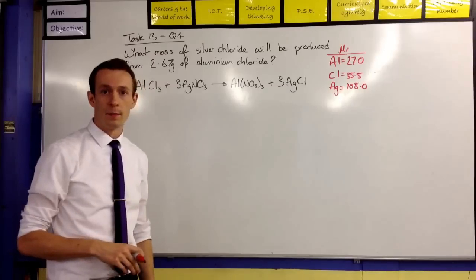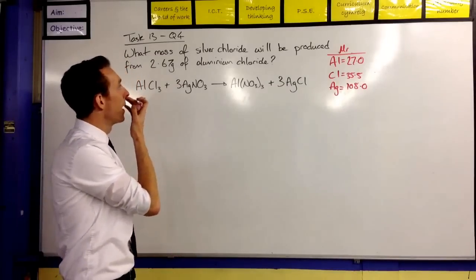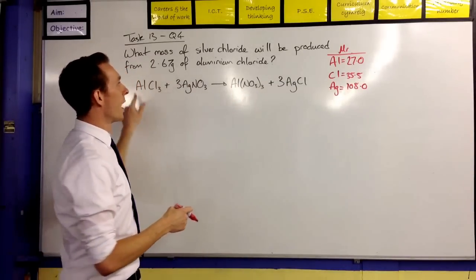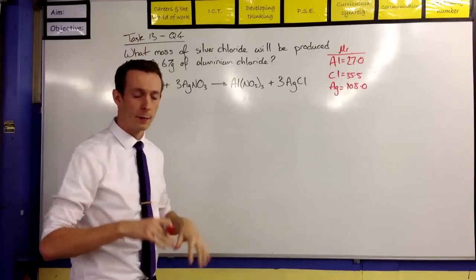So this is a summary, sort of basically of the question where it says, what mass of silver chloride will be produced from 2.67 grams of aluminium chloride? Okay, that's the basic summary of this question.